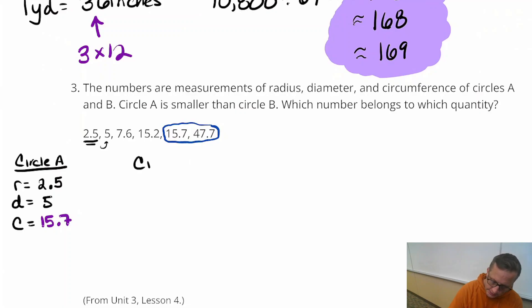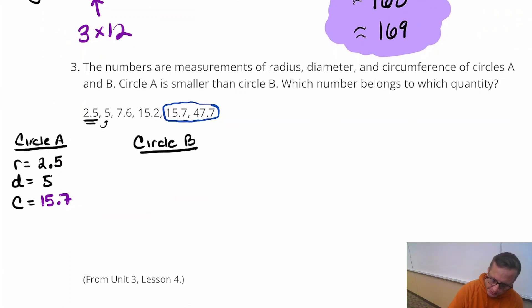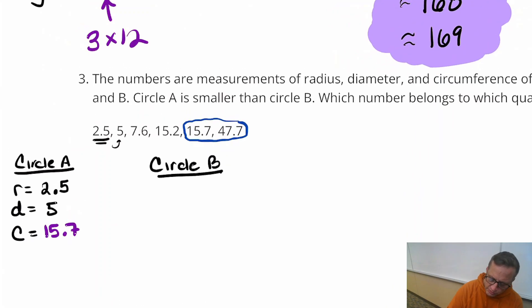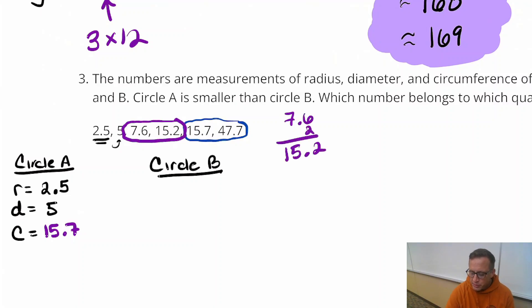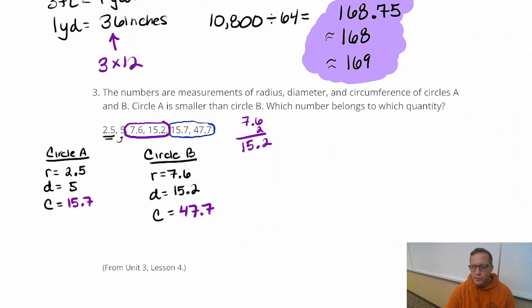So circle B, I would say circle B is going to be right here. And this is also pretty convenient, isn't it? Like these just happen to be next to each other, 7.6 and 15.2. I know that's not completely intuitive, but if you check that out, if you do 7.6 times 2, you get 15.2. So that's right there describing the radius and the diameter of circle B. So the radius is 7.6, and the diameter is 15.2. And the circumference must be 47.7. That was easy.